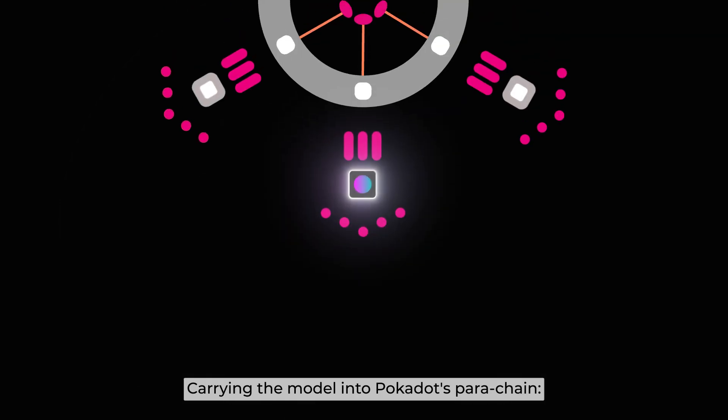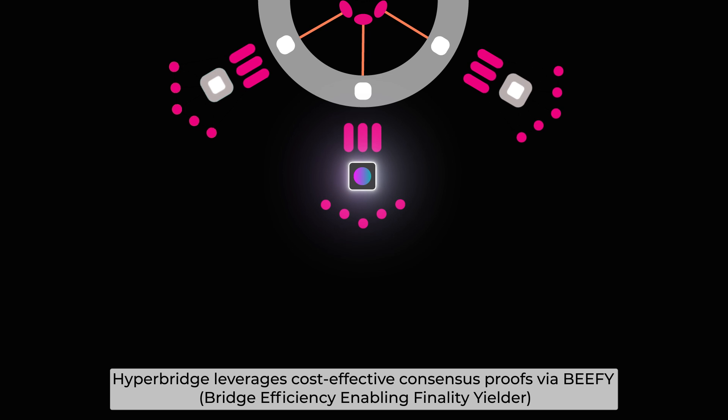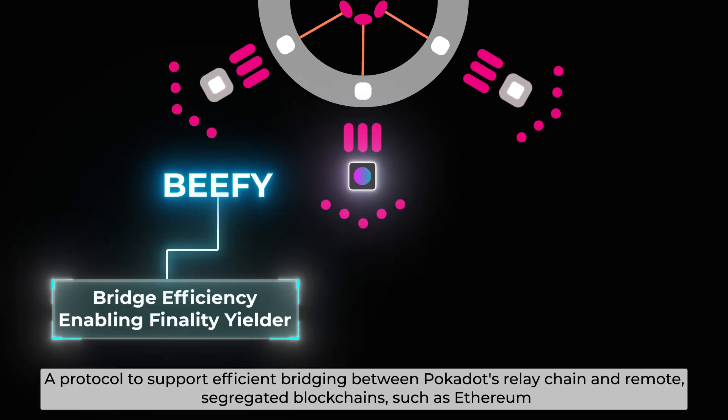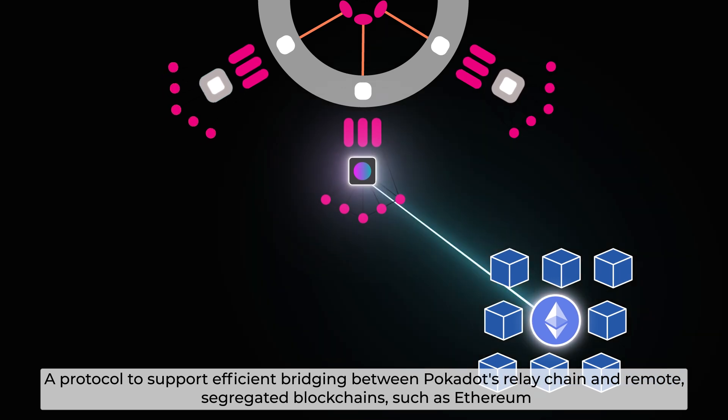Carrying that model into Polkadot's parachain, Hyperbridge leverages cost-effective consensus proofs via Bifi, a protocol to support efficient bridging between Polkadot's relay chain and remote, segregated blockchains, such as Ethereum.